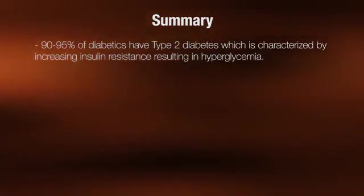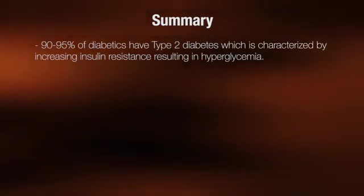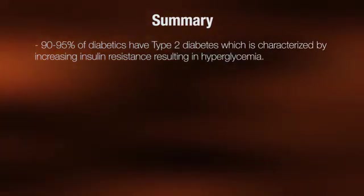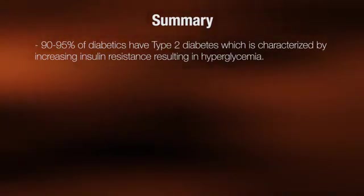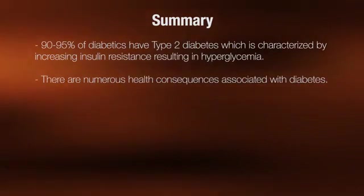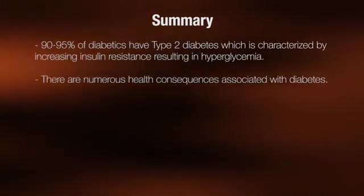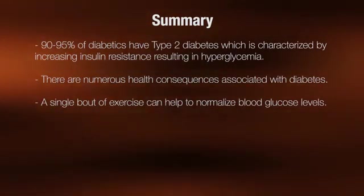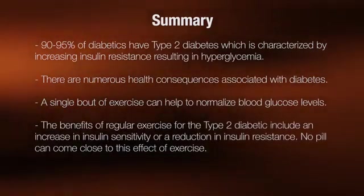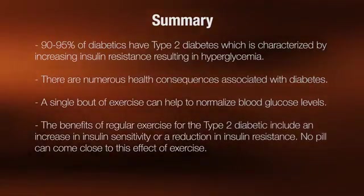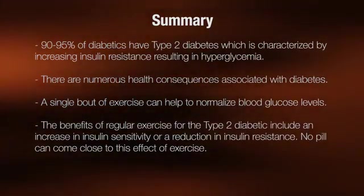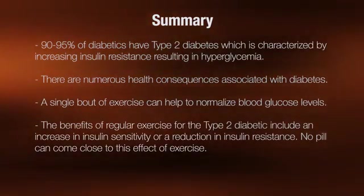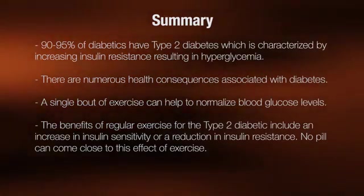In summary, 90 to 95% of diabetics have type 2 diabetes, which is characterized by increasing insulin resistance resulting in hyperglycemia. There are numerous health consequences associated with diabetes. A single bout of exercise can help to normalize blood glucose levels. The benefits of regular exercise for the type 2 diabetic include an increase in insulin sensitivity or a reduction in insulin resistance. No pill can come close to these effects of exercise.